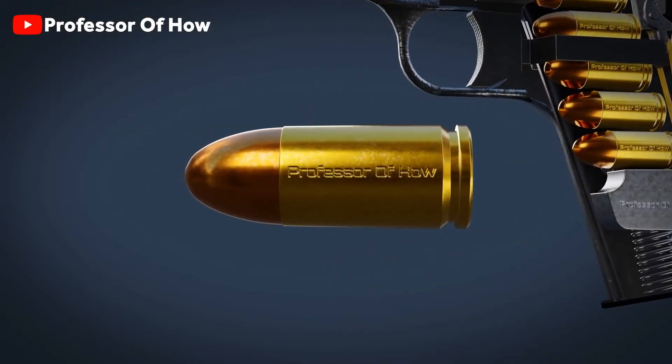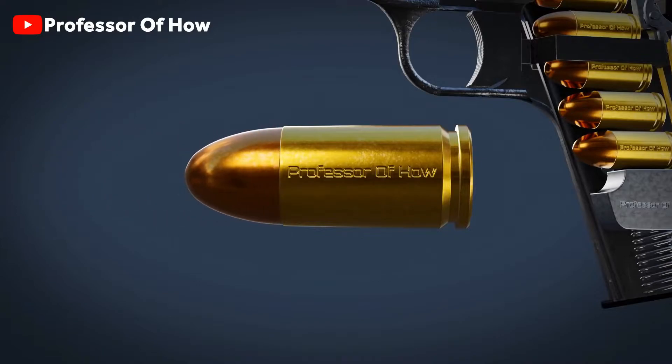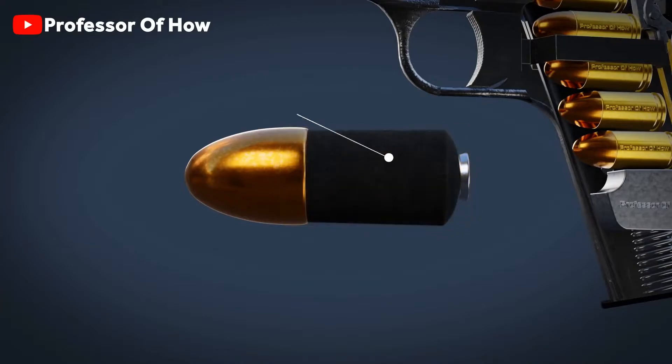This whole part is not known as a bullet. Only this one-third part is called a bullet. This whole part is known as cartridge. And this outer covering is known as the case. And the fuel is filled inside this case only, which can also be marked as an explosive material.